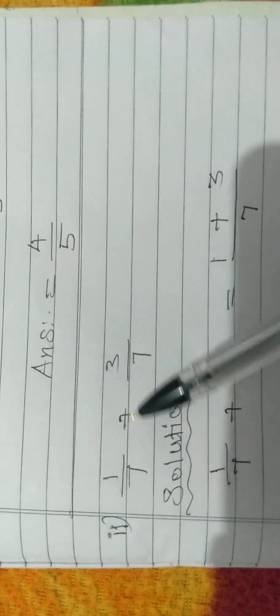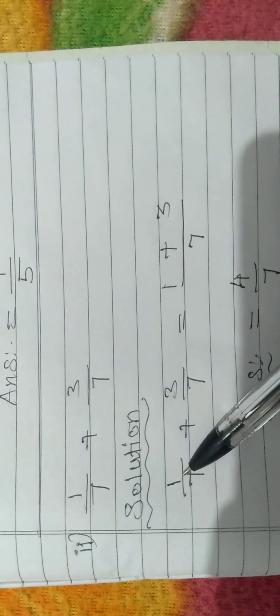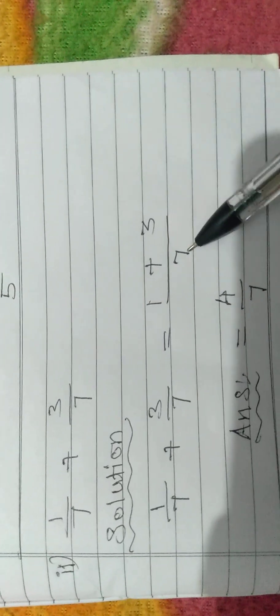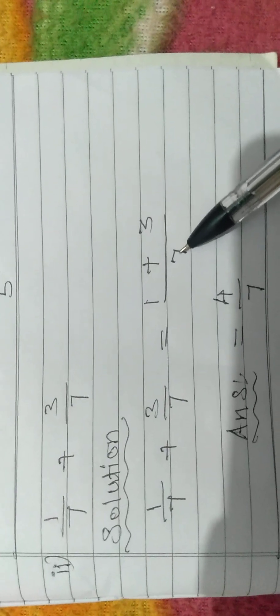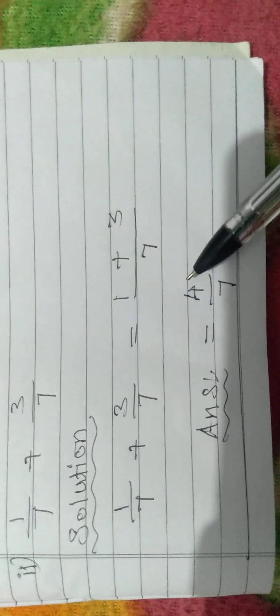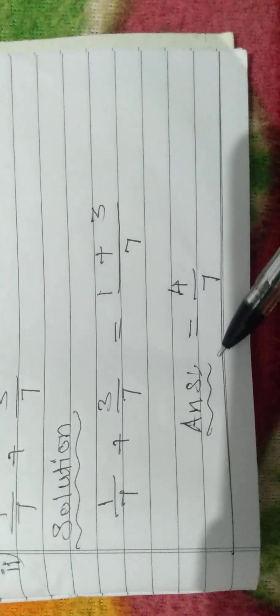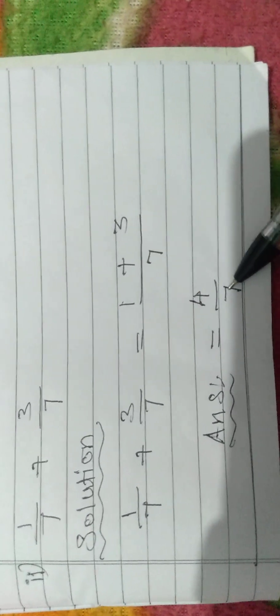Next: fraction 1 by 7 plus fraction 3 by 7. Solution: we can write the question as 1 by 7 plus 3 by 7. The denominators are the same, so we write the same denominator 7. We add only the numerators: 1 plus 3 is equal to 4. The answer is fraction 4 by 7.